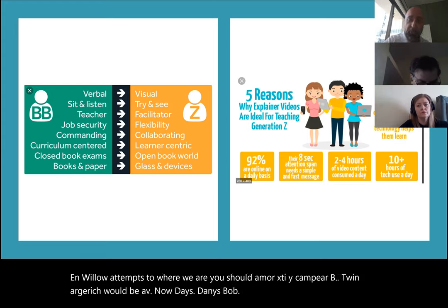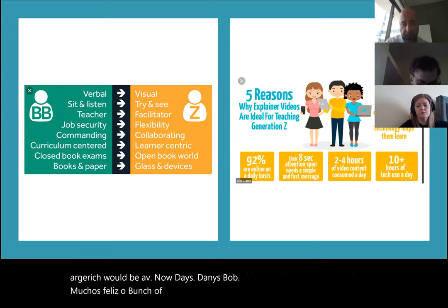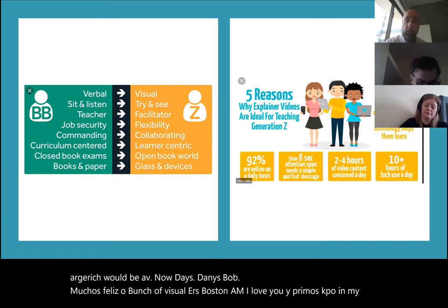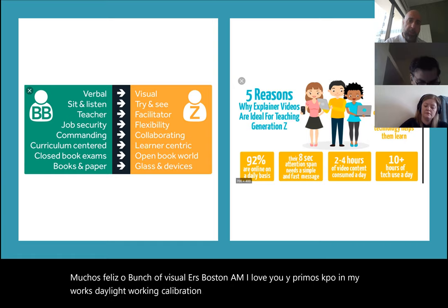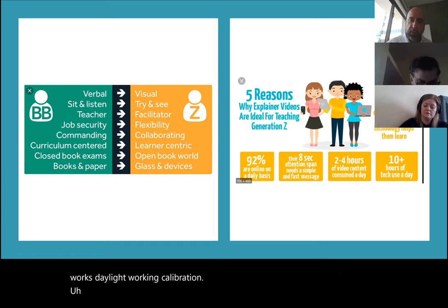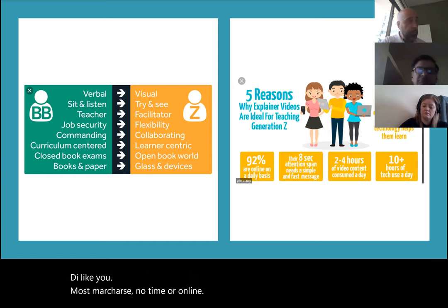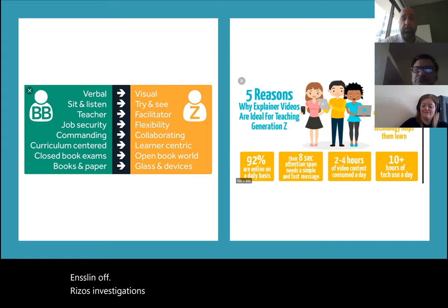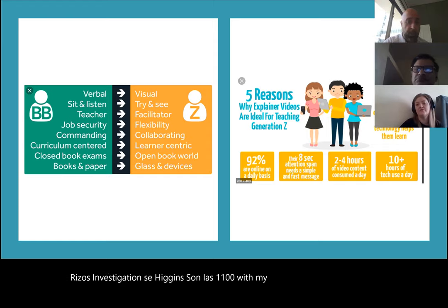Generation Z are mostly visual learners, and if not visual, then pretty much kinesthetic — they want to try things and see that what they try works. They like to work collaboratively and use technology. Most of them — 92 percent — are online, and research says they have an eight-second attention span. That's quite scary: eight seconds. So most of you, if you were Generation Z, you'd already be asleep because we've been talking for more than two minutes.